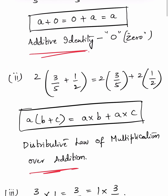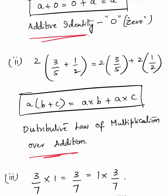2 × (3/5 + 1/2) = 2 × 3/5 + 2 × 1/2. This is in the form of a × (b + c) = a × b + a × c. We have 'a' outside the brackets and b + c within the brackets, and we distribute: a×b + a×c. So, this is the distributive law of multiplication over addition.